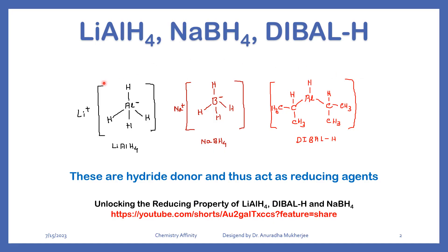This is the structure of lithium aluminum hydride, sodium borohydride, and DIBAL. Here you can see aluminum is connected with 4 hydrogens in lithium aluminum hydride, boron is connected with 4 hydrogens in sodium borohydride, and in DIBAL — diisobutyl aluminum hydride — aluminum is connected with only 1 hydrogen. These are all hydride donors and this is the way they act as reducing agents.